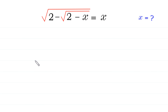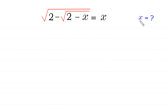Hello, welcome to how to solve this radical equation. We have the square root of 2 minus the square root of 2 minus x is equal to x, and we need to find all possible values of x.